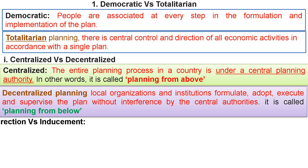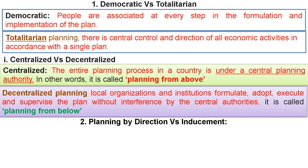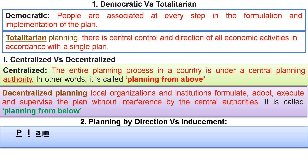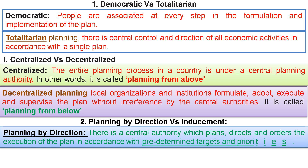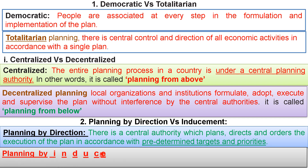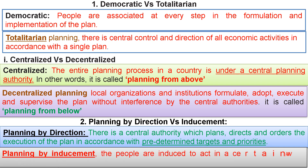Planning by direction versus inducement: Planning by direction has a central authority which plans, directs, and orders the execution of the plan in accordance with pre-determined targets and priorities. Planning by inducement: the people are induced to act in a certain way through various monetary and physical measures.